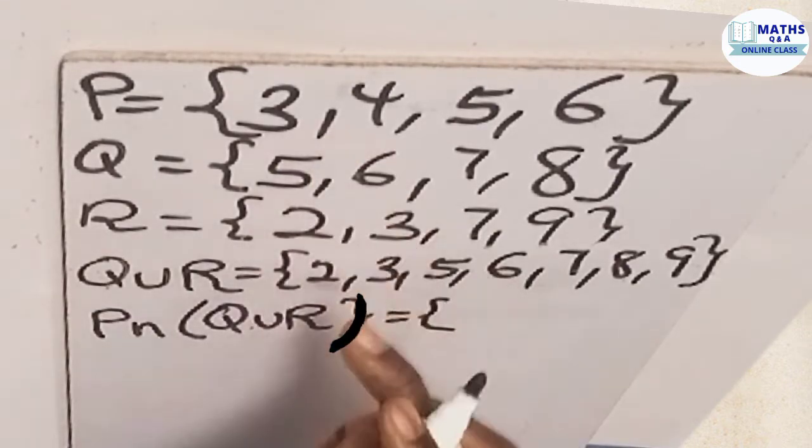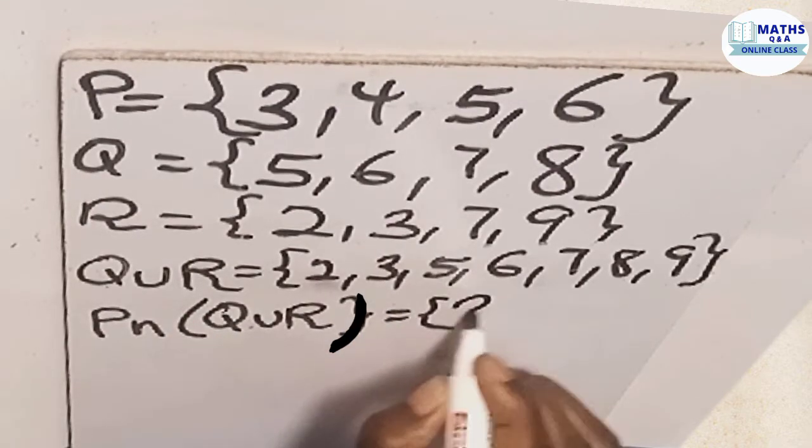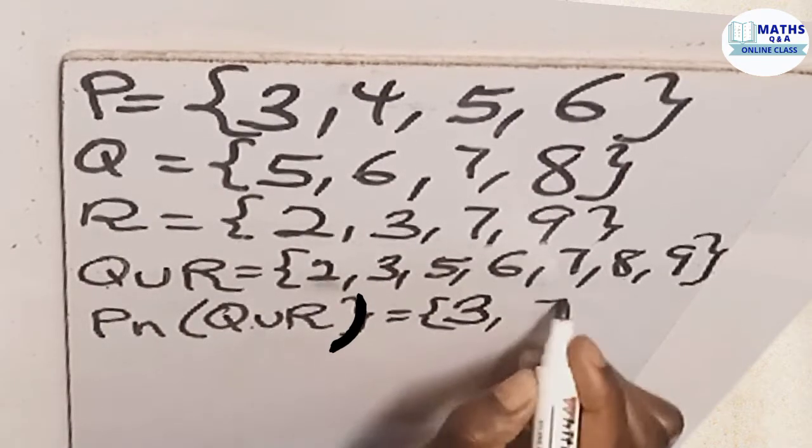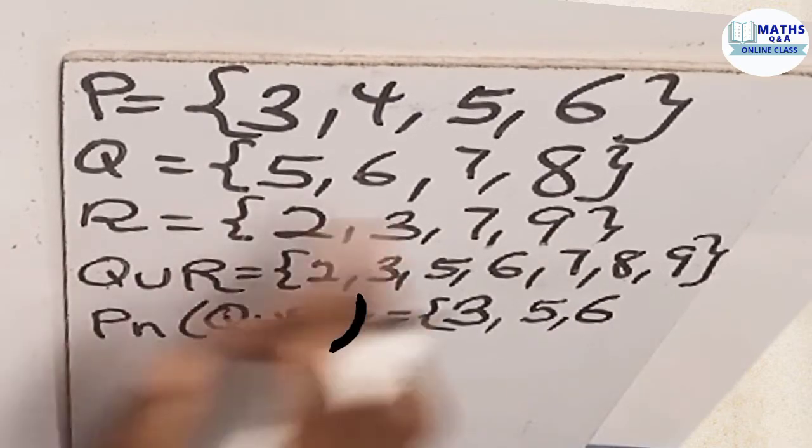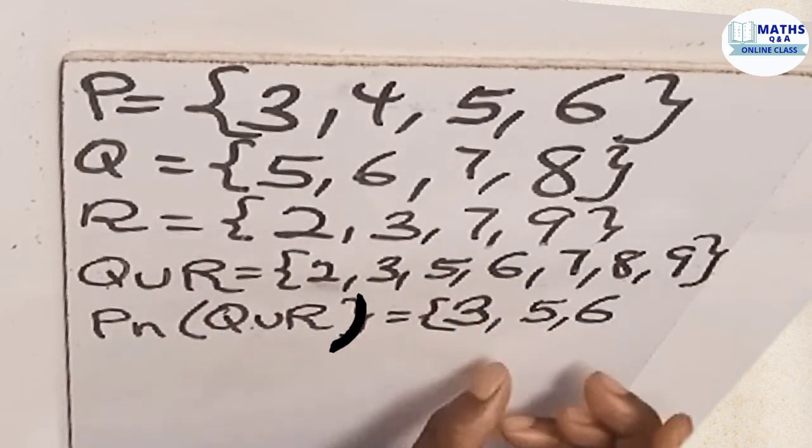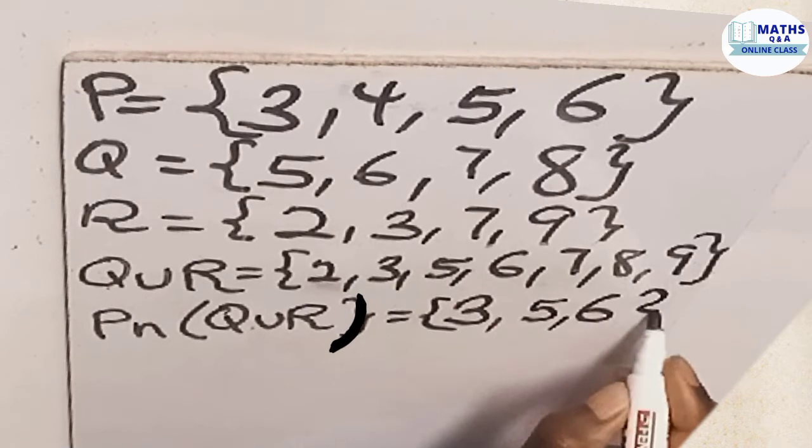It means those which are common to those two sets. So we go through set P and go through set Q union R and write those which can be found common to the two sets. Now we have 3 here in set P and we also have 3 here in set Q union R, so we write 3. We have 4 in set P but we don't have 4 in set Q union R so we won't write it. We have 5 in set P and we also have 5 in set Q union R so we write 5. We have 6 in set P, we also have 6 in set Q union R so we write 6. Now we don't have any other members in set P again so we can't continue the comparison. So this is the end of the members which can be found in P and can also be found in set Q union R. So we close our brackets.